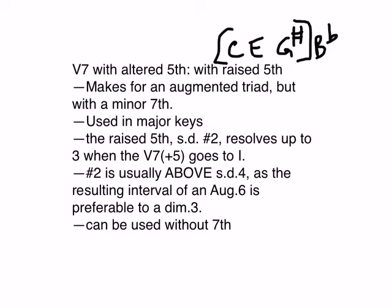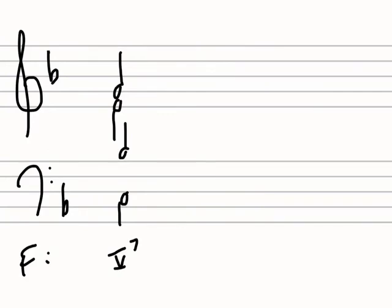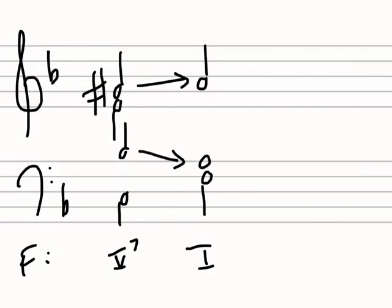I'll show you the spacing because usually in this case, the G sharp will be above the B flat, and it looks something like this. So now, when I make that a G sharp, that goes up to A. The B flat, the seventh of the five seven, goes down to A.